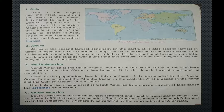Africa is the second largest continent on the earth and also second largest in terms of population. This continent comprises 54 countries and is home to about 15% of the world's population. It was also called the dark continent because very little was known to the outside world until the last century. The world's longest river, the Nile, lies in this continent.